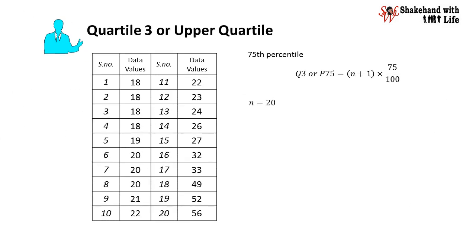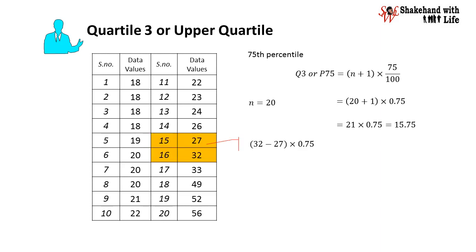For the upper quartile, we find the 75th percentile using the formula (n + 1) × 75 / 100. With n = 20: 21 × 0.75 = 15.75. Hence the upper quartile is the value at position 15.75, which is 27 at the 15th position plus 0.75 of the way between 27 and 32 — that is, 27 + 5 × 0.75 = 30.75.